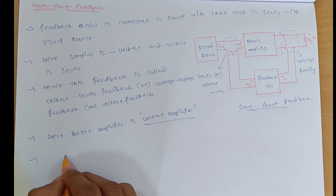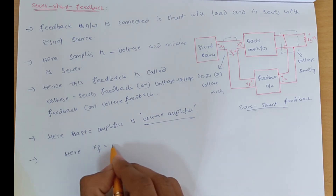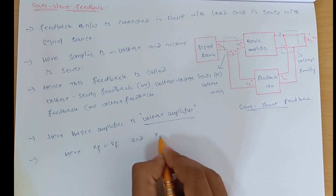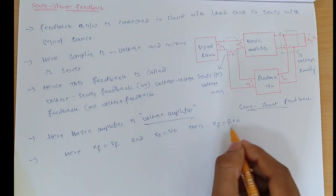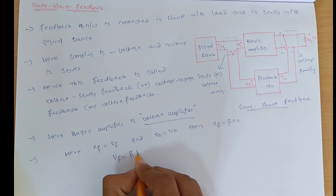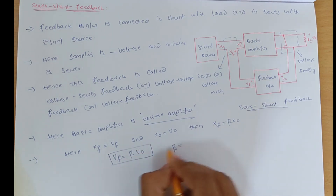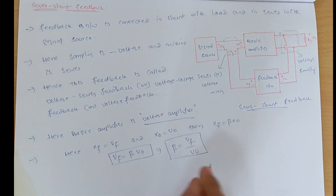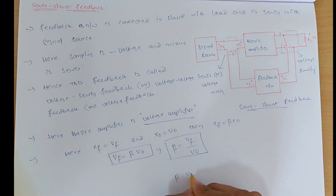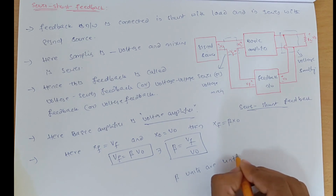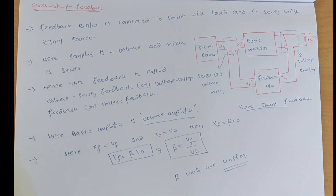Here, feedback signal xf = Vf and output signal x0 = V0. Then Vf = β × V0, so beta = Vf / V0. The units of beta are unitless because it is the ratio of two voltages. This completes the discussion of the different negative feedback topologies. Next, we will see the procedure to identify the type of feedback.